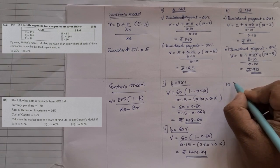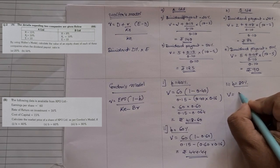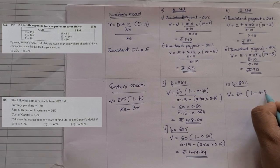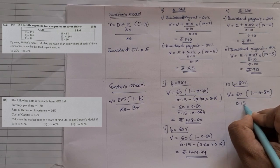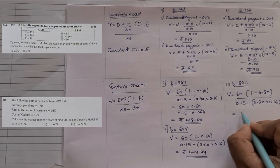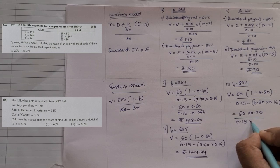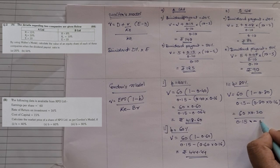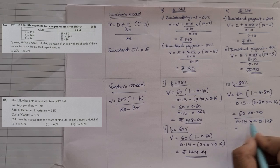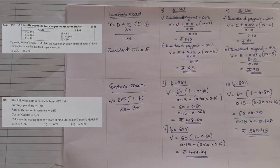When beta = 80%: Value of Share = 60 × (1 − 0.80) / (0.15 − 0.80 × 0.16) = 60 × 0.20 / (0.15 − 0.128) = 12 / 0.022 ≈ ₹545.45.